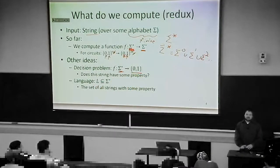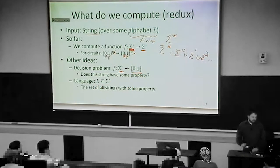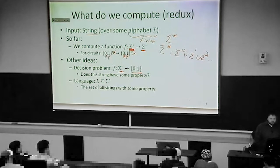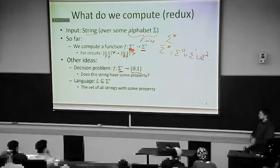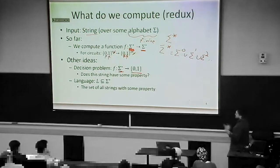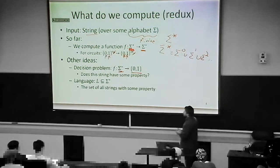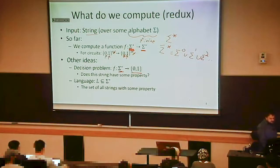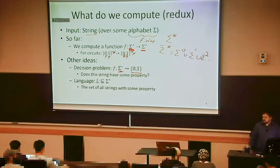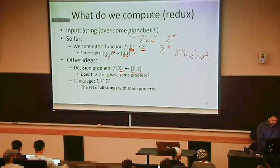This particular kind of function where our input is whatever string and our output is either zero or one — we call those decision problems — because we're essentially just deciding whether or not the given string has some property. Any question about strings for which the answer is yes or no is called a decision problem. So functions where the output is Boolean or binary.